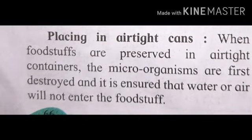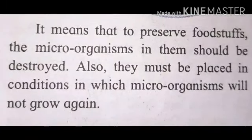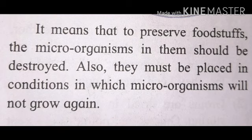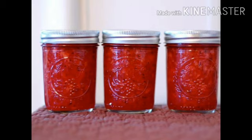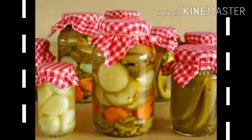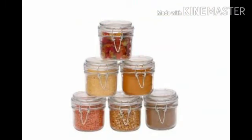Next, placing in airtight cans. When foodstuffs are preserved in airtight containers, the microorganisms are first destroyed and it is ensured that water or air will not enter the foodstuff. To preserve foodstuffs, the microorganisms in them should be destroyed, and they must be placed in conditions where microorganisms will not grow again. Some foodstuffs are packed in airtight containers. When we preserve food in airtight containers, it will not get spoiled quickly. We should keep foods such as jam or pulses in airtight containers so microorganisms cannot enter and food is preserved for a longer time.